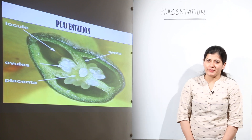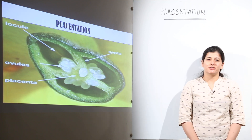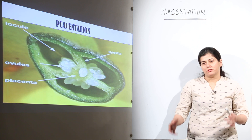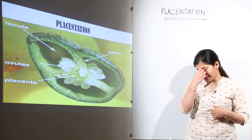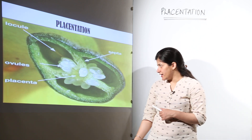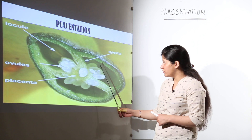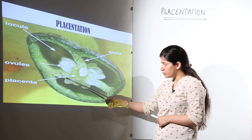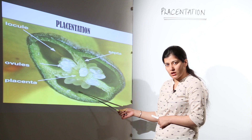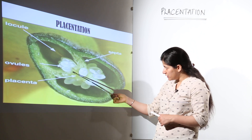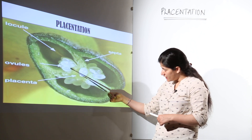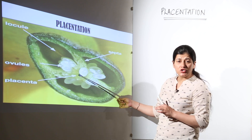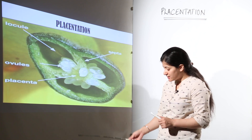The next topic we are going to discuss is placentation. Placenta is the site where the ovules are attached to the ovarian locule or the ovarian wall. If there is a septum present, the ovule would be attached to the ovarian wall at this particular site, which is known as placenta.